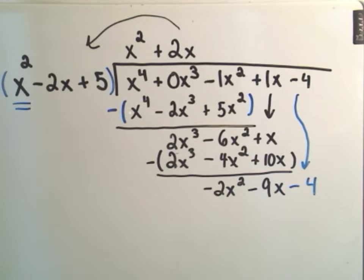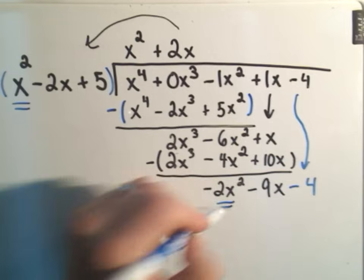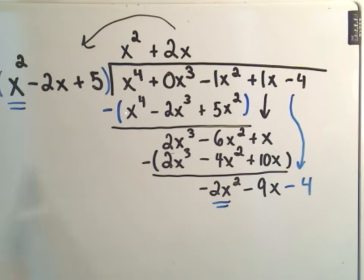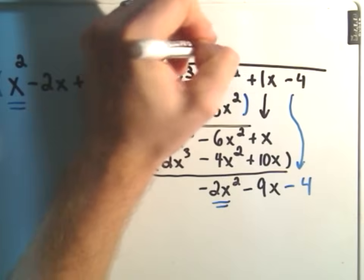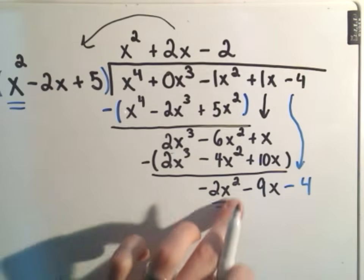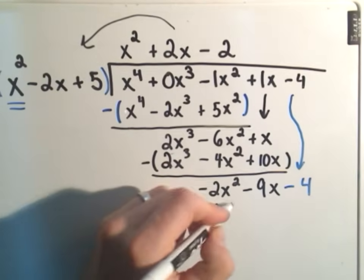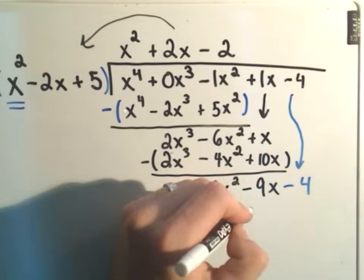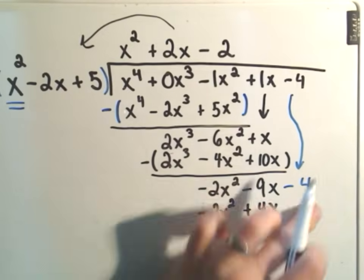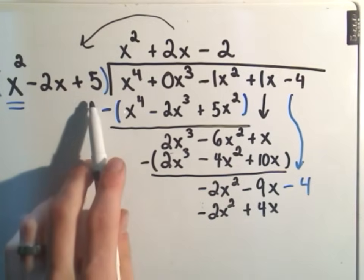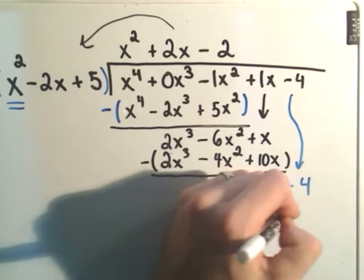Okay, so that'll be the new part. Now I look at the x squared and the negative 2x squared. And I think, well, x squared times what is negative 2x squared? I'll need a negative 2. So when I multiply, I'll get negative 2x squared, I'll get positive 4x, I'll get negative 2 times positive 5, which is negative 10.